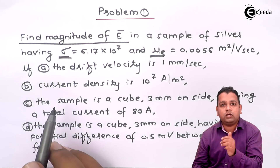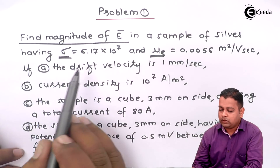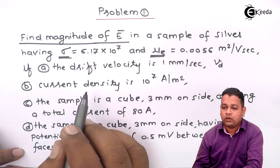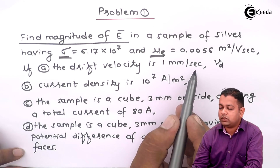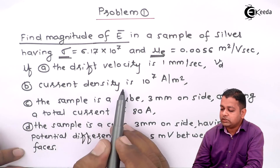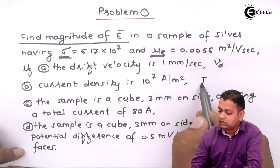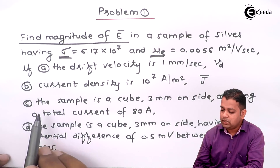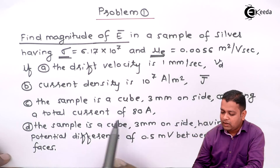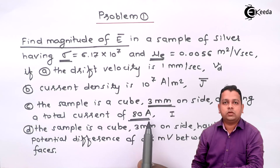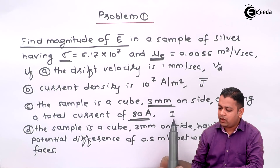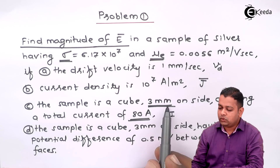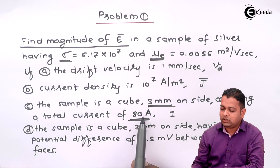The conditions are provided for all four parts, and in every part one more piece of information is given. In part A, drift velocity V_D is provided, equal to 1 millimeter per second. In part B, current density J is 10⁷ ampere per meter square. In part C, the sample is a cube 3 mm on side carrying a total current I of 80 amperes — that gives us 4 given values. In part D, a potential difference of 0.5 millivolt is given between opposite faces of the cube, again 4 given values.